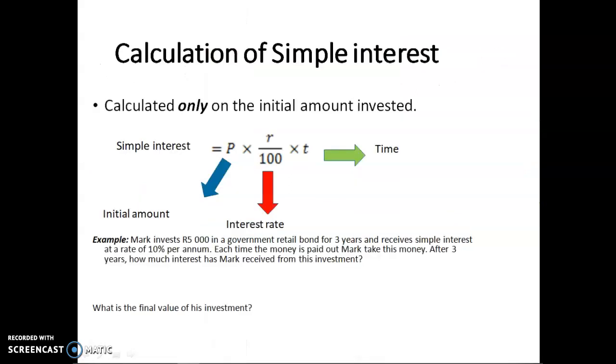You will need to know how to calculate simple interest and you need to know this formula. Remember, it's only calculated on the initial amount, that principal amount. If we look at this example below, Mark invests 5,000 rand in a government retail bond for three years and receives simple interest at a rate of 10%.